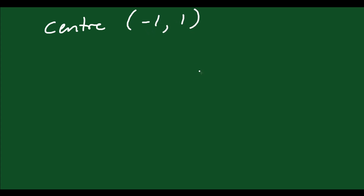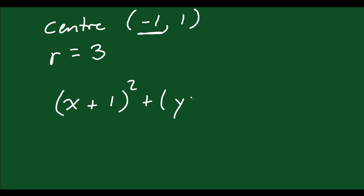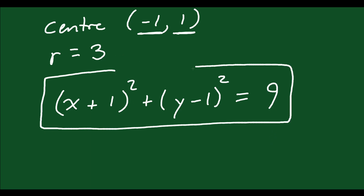Let's do one more. If the center is at (negative 1, 1) and the radius equals 3, we can write the equation directly. It moved 1 to the left, so we write x plus 1, squared. It moved up 1, so we write y minus 1, squared. The radius is 3, so r squared equals 9. The equation is (x plus 1) squared plus (y minus 1) squared equals 9. You could graph that as well if you wish.